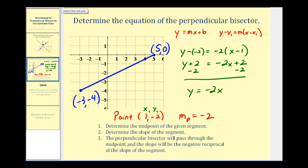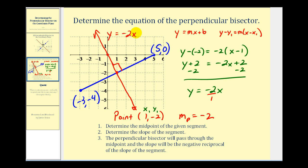Let's graph that and verify it is the perpendicular bisector. With a y-intercept of zero and a slope of negative two, we go down two and right one — and notice we land at the midpoint, one, negative two, of the segment. So this does bisect it, and the line forms a right angle with the blue segment. The equation of the perpendicular bisector is y equals negative two x. I hope you found this example helpful.